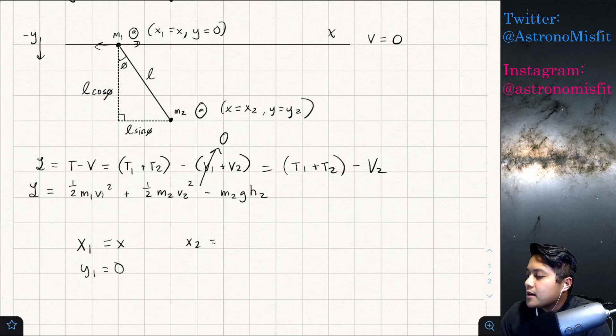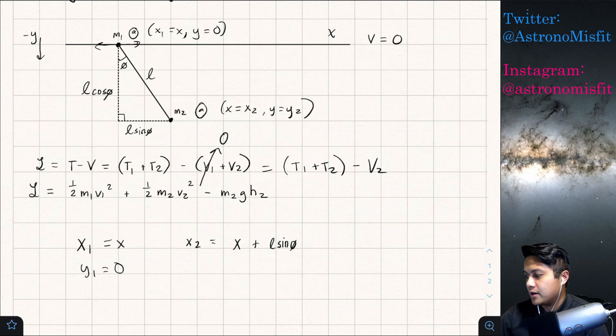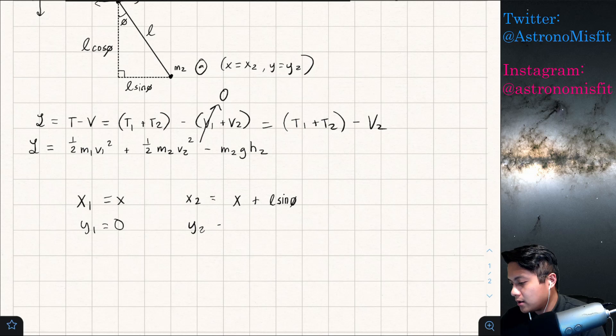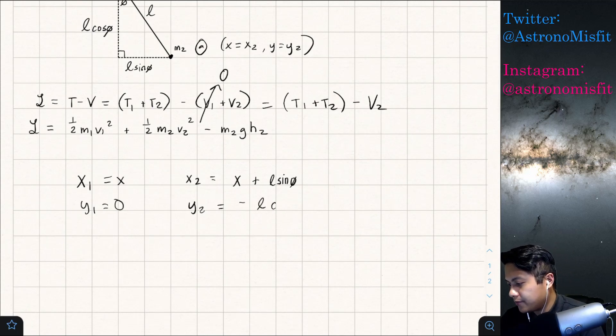And then we'll say that x2 is equal to, well let's think about this. Mass 2 is here, right? It is offset by L sine phi from mass 1, and because we know mass 1 is at a position x at all times based on our definition, we can say that x2 is always just going to be x plus L sine phi, right? Because x represents the position of mass 1 like we've written over here on the left hand side, and this L sine phi is this offset between the two at all times. And so because of that we can write x2 as x plus L sine phi, and then we can say that y2 is equal just to the negative of this length right here because that's below the y-axis. I've defined this to be the negative y-axis right there. And so y2 is going to be negative L cosine phi.